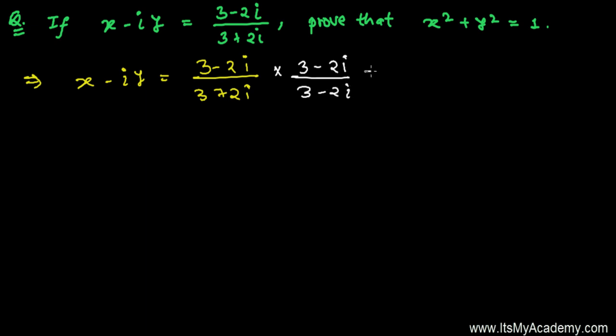Then we'll get (3-2i)(3-2i), so it's going to be the square of (3-2i), and then divided by a+b, a-b.